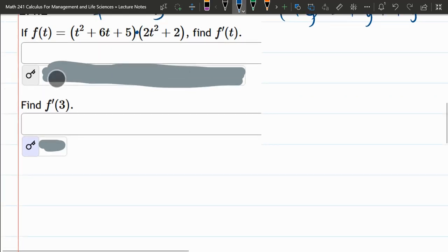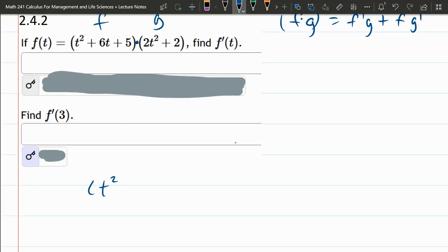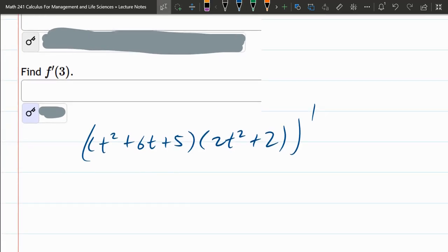When we take the derivative, we'll do it down below here. So I'm just rewriting t squared plus 6t plus 5 times 2t squared plus 2. We're taking a derivative. So I had an extra parentheses to say that we're differentiating the whole product.